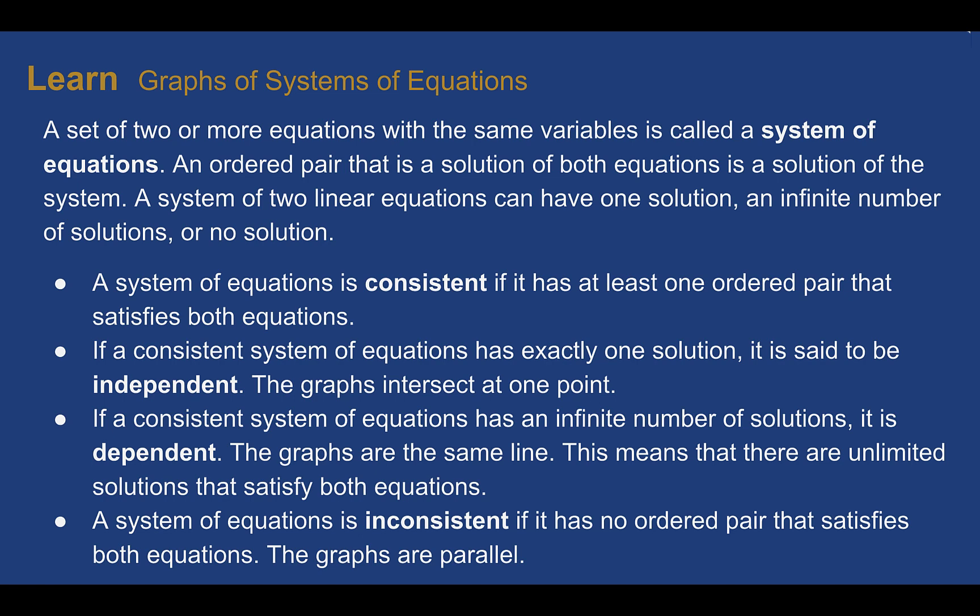Some other words we can use to describe our system: if a system of equations is consistent, then at least one ordered pair will make both equations true. Within those consistent systems, we can say it is independent if there's exactly one solution — the graphs will intersect at exactly one point. Or we could say the system is dependent, which is when you have an infinite number of solutions — the graphs of both lines will be in the exact same place, essentially the same line.